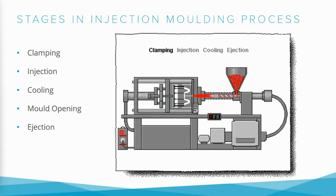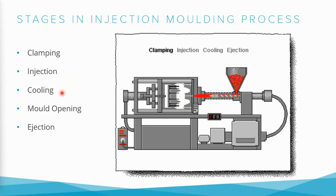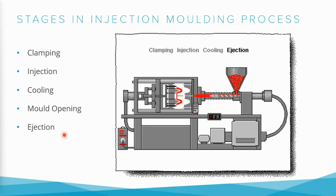Let's have a look at the injection molding process stages. In the first stage we have clamping, where the mold is closed. Once clamped, we inject material into it. Once the material is totally injected, we start cooling the mold to solidify the molten plastic material inside. Once solidified, we open the mold and the part is ejected. This is how the injection molding stages repeat continuously.